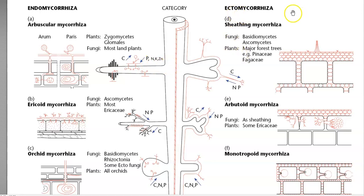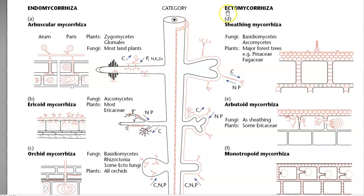The next category is ectomycorrhizal or sheathing mycorrhizal, which is commonly found in forest trees. Fungi under this category include Basidiomycetes and Ascomycetes. Plants belonging to the families Pinaceae and Phagaceae are commonly infected by ectomycorrhizal. Here, carbon is supplied by the plant system, while nitrogen mineralization and phosphorus mobilization are increased by the mycorrhizal association. Looking at the diagram, ectomycorrhiza forms a sheath on the surface of the root — that is the reason it is referred to as sheathing mycorrhiza.